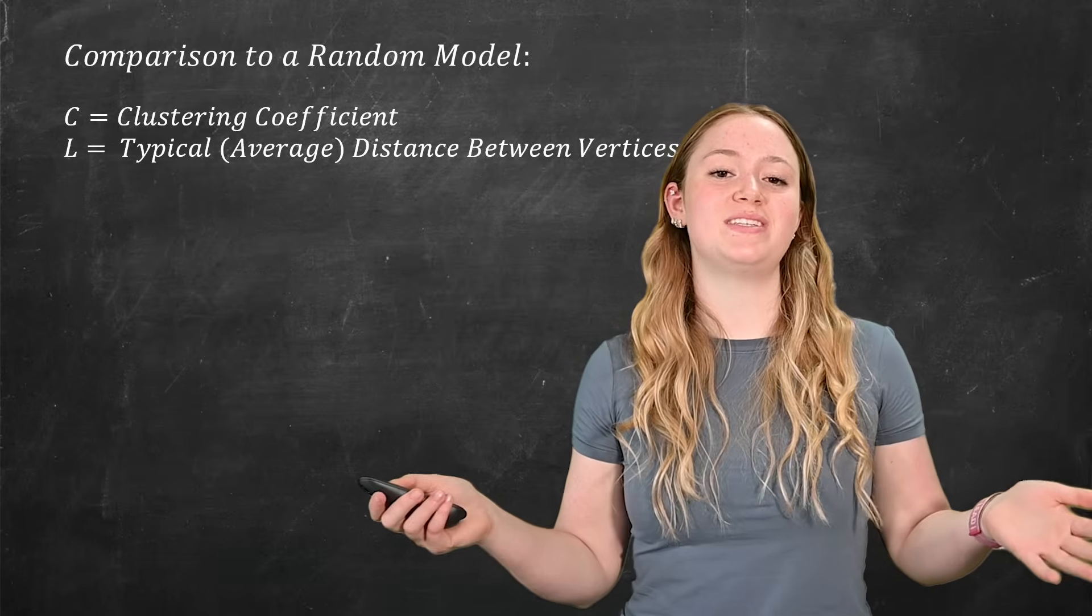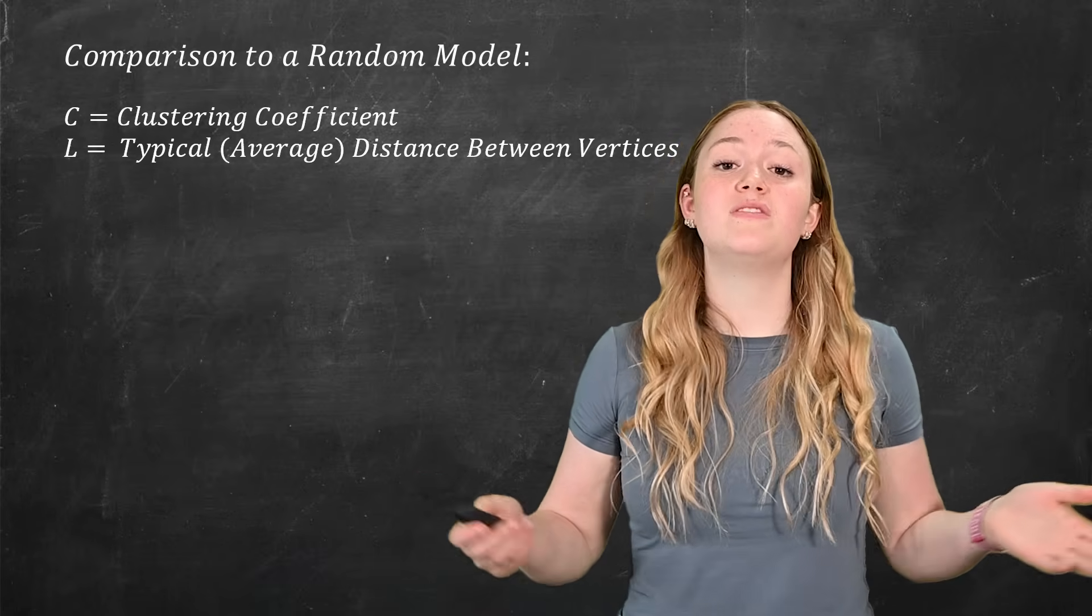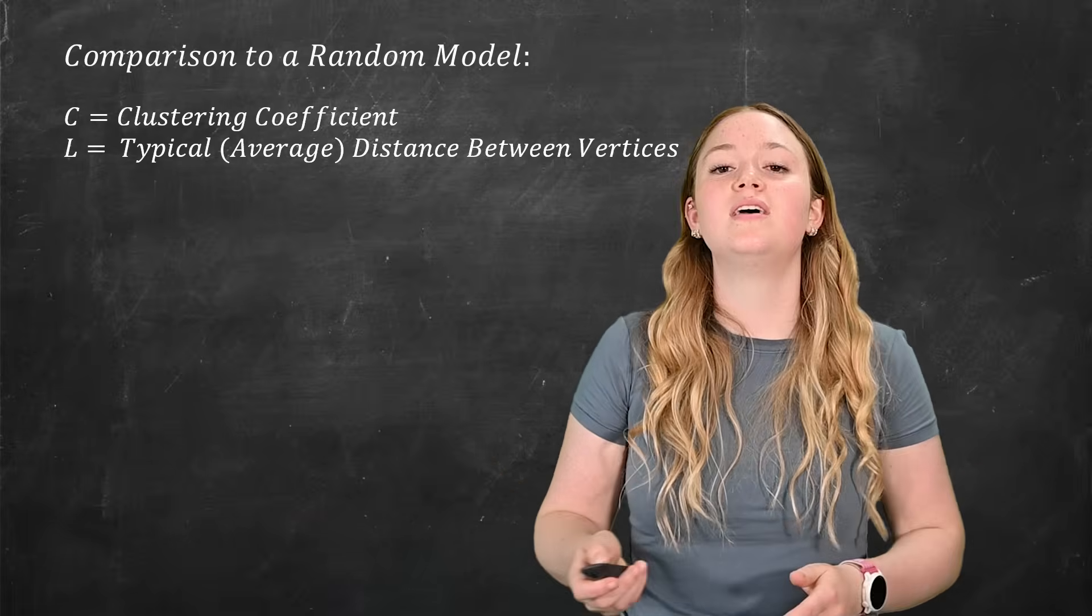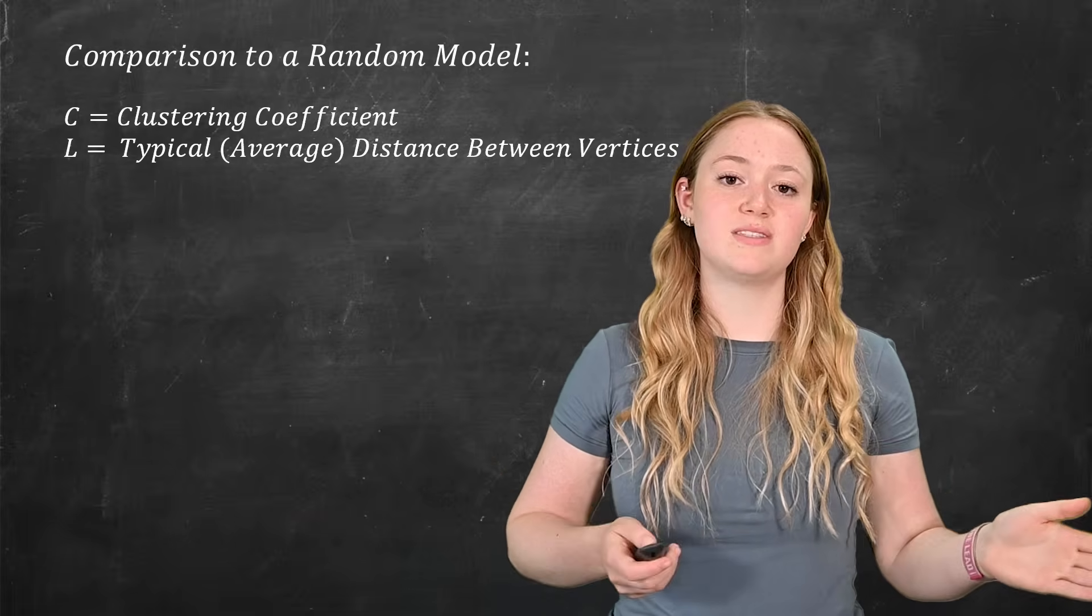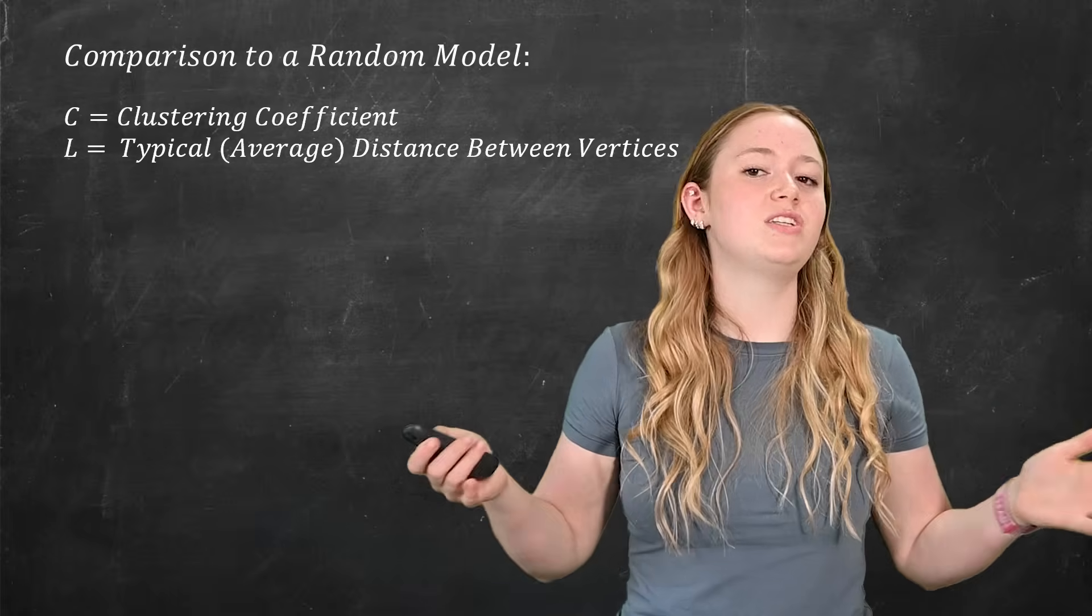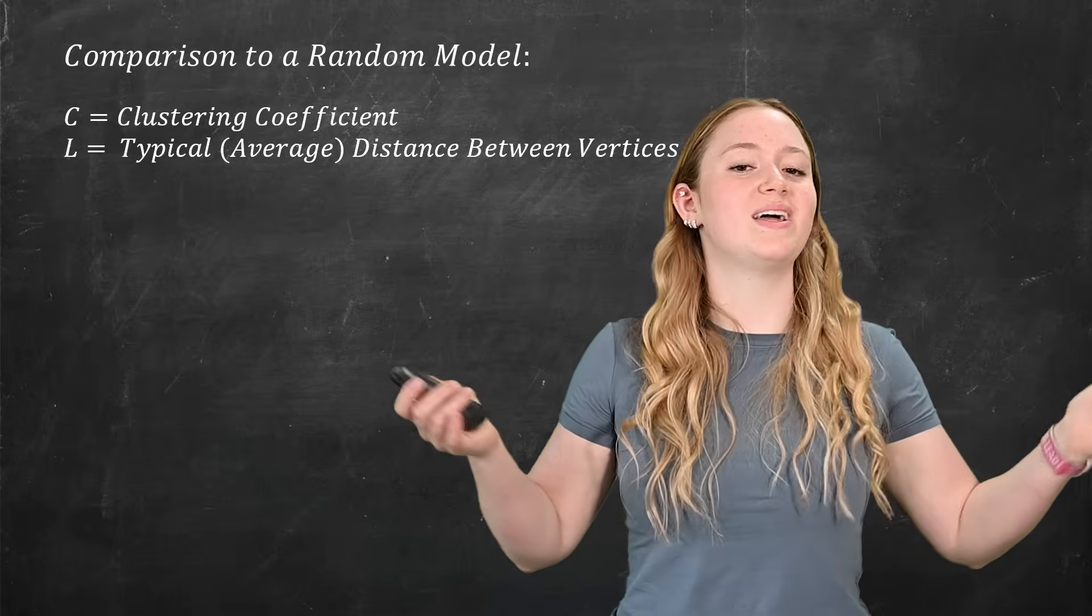Well, this is all interesting, but how do we actually compare it? We've chosen our random graph with an equivalent density, but what do we do now? So in order to compare the graphs, we are going to use the clustering coefficient, which we know how to calculate, and the average distance between the vertices, which we know how to calculate in average.